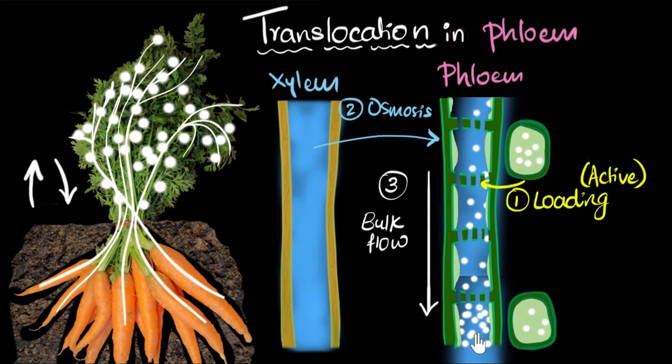And then finally, the sugar reaches the low pressure region because there is less concentration of sugar, it will move out of phloem. And it can now be taken up by this cell. And so this we'll call it as step four. Unloading happens. The sugars get unloaded from the phloem tube into the required cell.